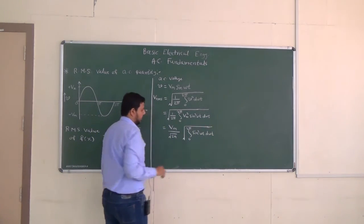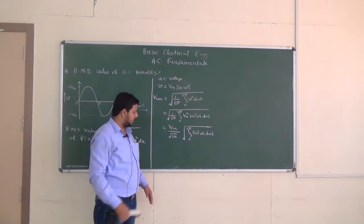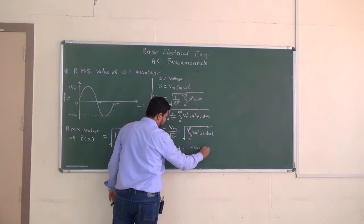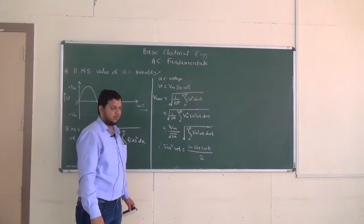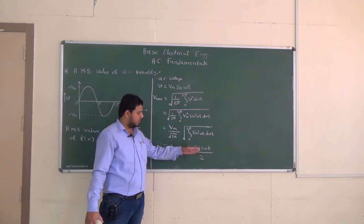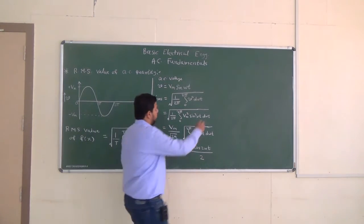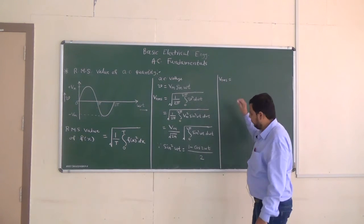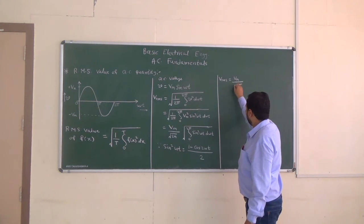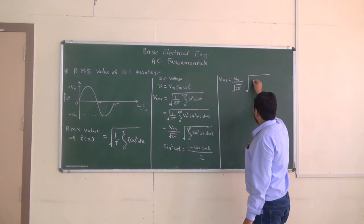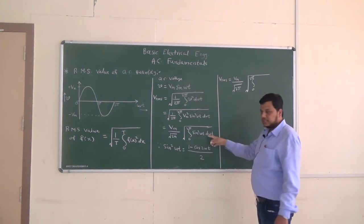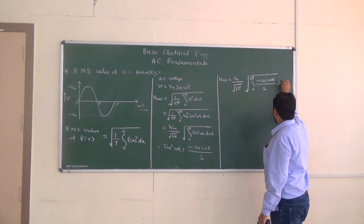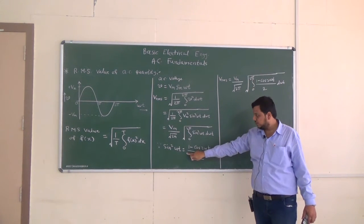Now we need to calculate the integration of sin²(ωt). From the basic identity, sin²(ωt) = (1 − cos(2ωt)) / 2. Why divided by 2? Because 1 − cos(2ωt) equals 2·sin²(ωt), so we divide by 2 to isolate sin²(ωt). Substituting this, Vrms = (Vm / √(2π)) × √(integral from 0 to 2π of (1 − cos(2ωt))/2 · d(ωt)).